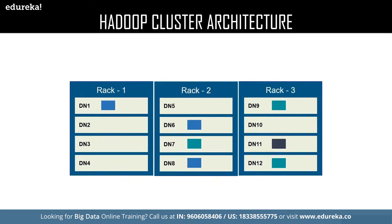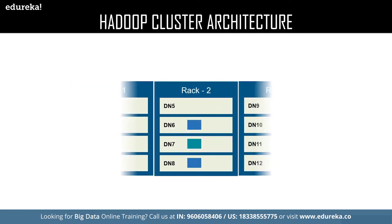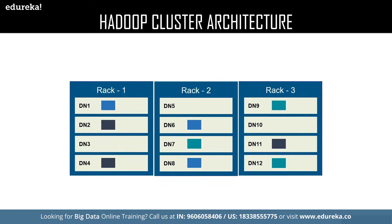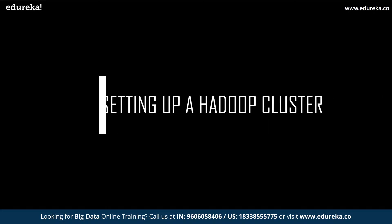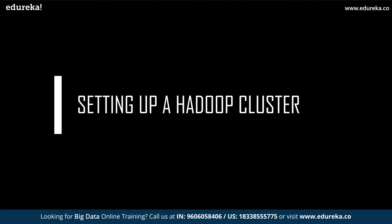We have a new data block stored in data node eleven; rack three is the local rack for this data block. The replicas of data node eleven are stored in the remote rack, which is rack number one, with the data blocks stored in data node two and data node four. With this, we have finished our theory part. Now let us get into the practical part where we learn to set up a Hadoop cluster with one master and two slaves.